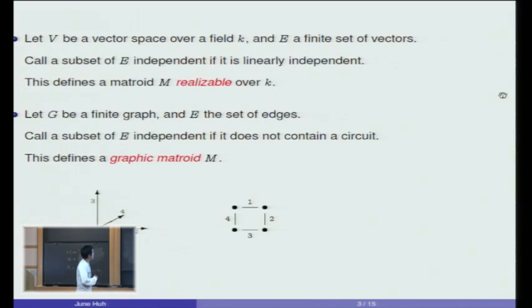The second example comes from a graph. Whenever you have a finite graph, you call E the set of edges, and you call a subset of edges independent when it does not contain a circuit. Matroids arising this way are called graphic matroids.